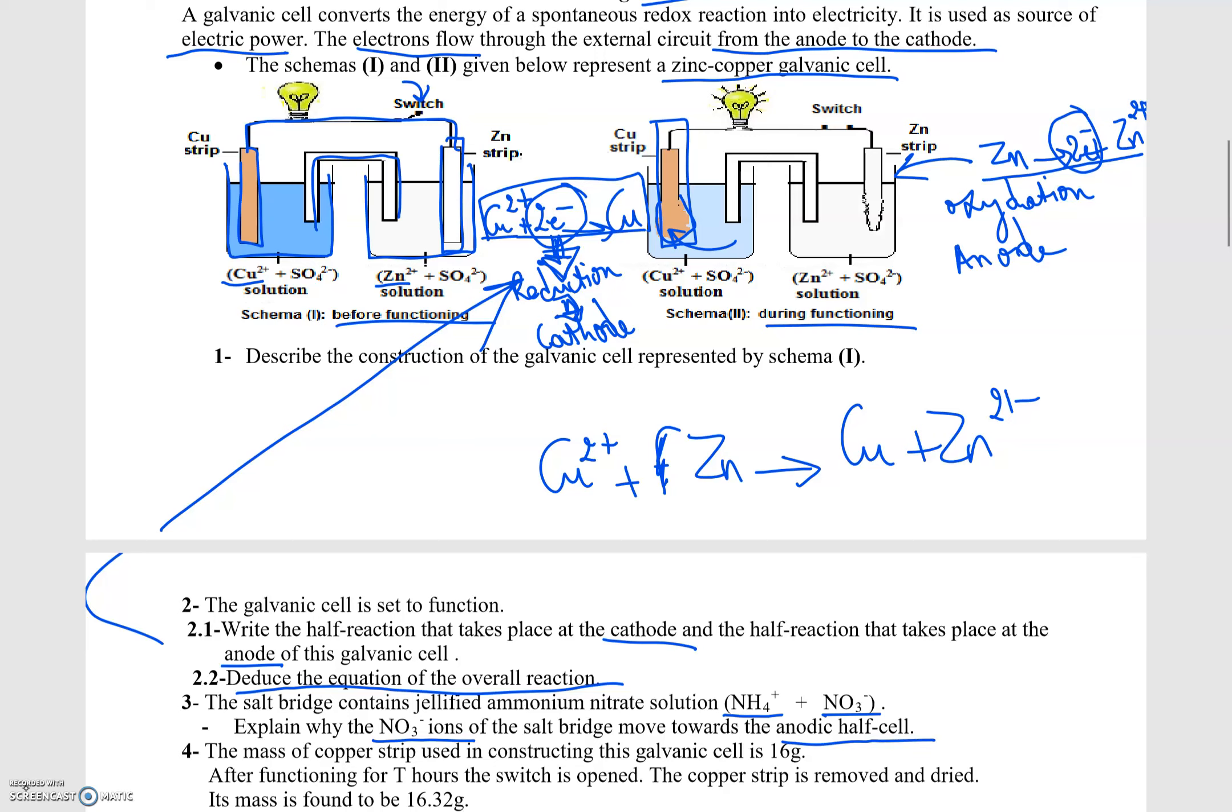Sometimes they might not tell us what's happening. They might ask us about which ions will migrate towards the anode. So the anions NO₃⁻ will move to the anode. Why? Because at the anode we have more production of positive ions, so to keep the electrical neutrality of this half-cell.